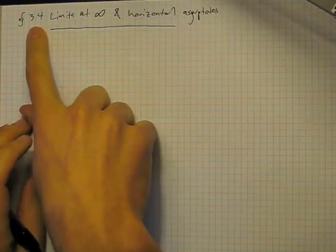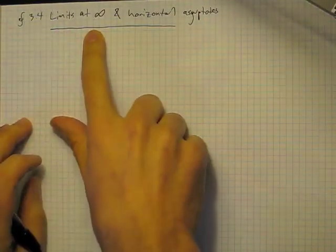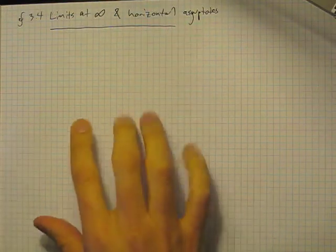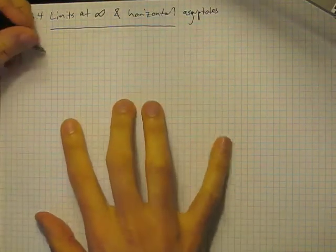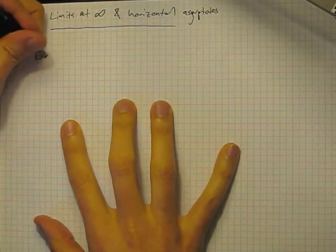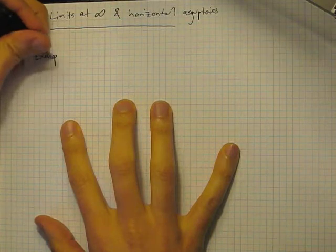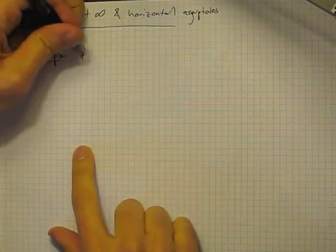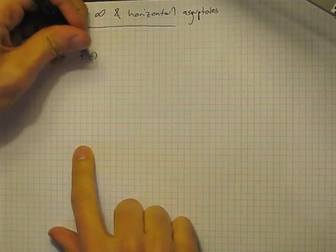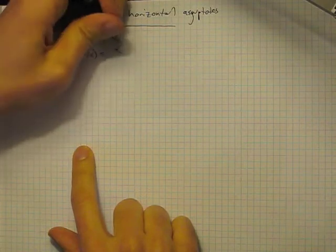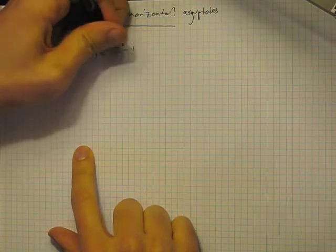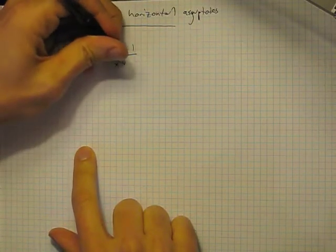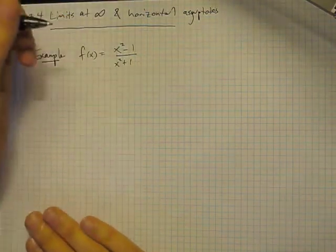We're going to go really quickly through section 3.4, which is a section called Limits at Infinity and Horizontal Asymptotes. I just want to start off this section with a really straightforward example. So we want to look at the function which is a rational function: x squared minus 1 in the numerator, x squared plus 1 in the denominator.